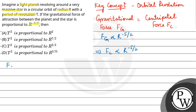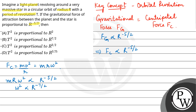Now, the centripetal force equals MV² upon R, and we can write it as MRω². So MRω² is directly proportional to R raised to the power minus 5 by 2. Since M is a constant, omega square is directly proportional to R raised to the power minus 7 by 2, taking R to the right-hand side.